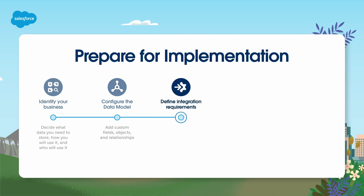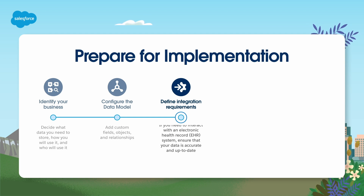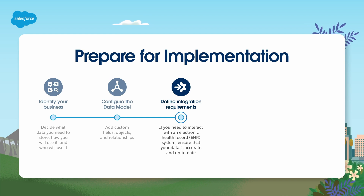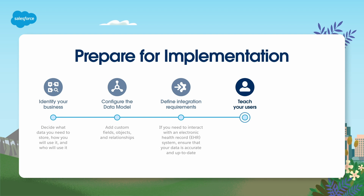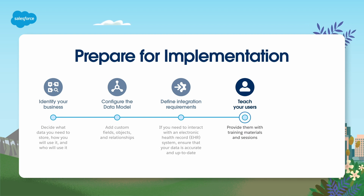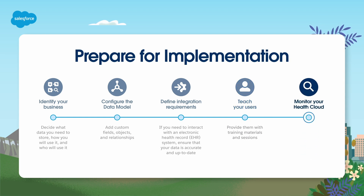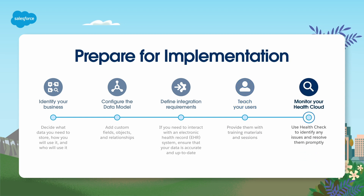Third, define your integration requirements with existing systems — for example, if you need to interact with an electronic health record system, ensure that your data is accurate and up-to-date. Fourth, teach your users how to use Health Cloud effectively by providing them with training materials and sessions. And finally, monitor your Health Cloud system regularly to ensure that it's running smoothly, using Health Check to identify any issues and resolve them promptly.